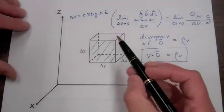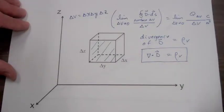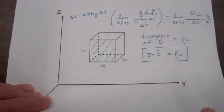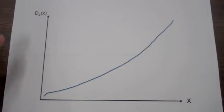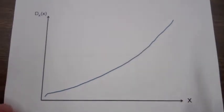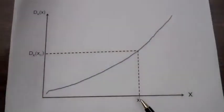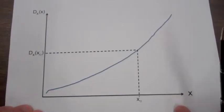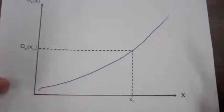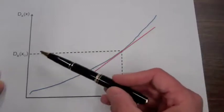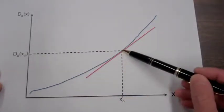What we want to do is see how we're going to estimate the electric flux density field on the front face and the back face, knowing the electric flux density at the center of the cube and how it changes with respect to x, y, and z. Here we have a plot of the electric flux density field in the x direction as a function of x. Let's assume the center of the cube is at x₀ and we know the value of Dx at x₀, and we also know the slope at x₀.